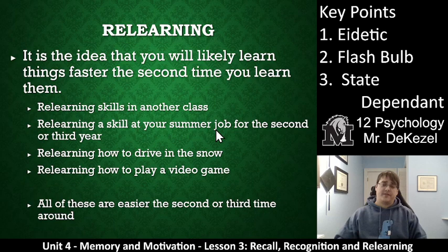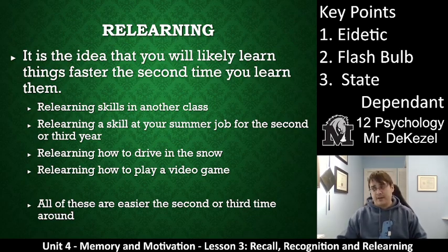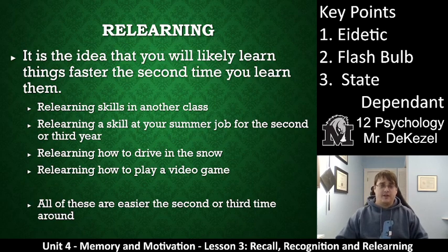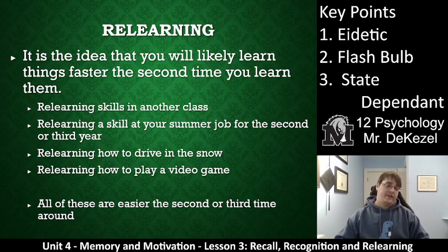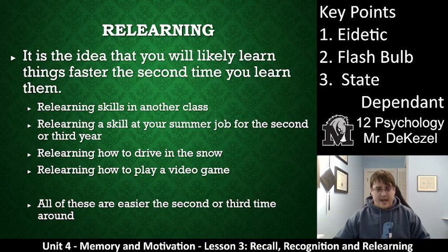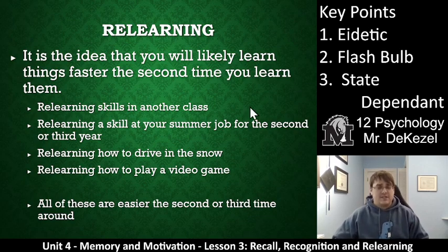Relearning is the idea that you will likely learn things faster the second time around. You've learned lots of things in early and middle school that are much easier to pick up again in high school. Learning something once, twice, three times is very useful. Relearning a skill in another class is why classes sometimes overlap. You relearn a skill at your summer job for the second or third year in a row — like driving in the snow — and you get better at it. You relearn a video game after six months away and are quickly good at it again. All of these are easier the second or third time because you've already made those connections and just need to tidy them up in your brain.